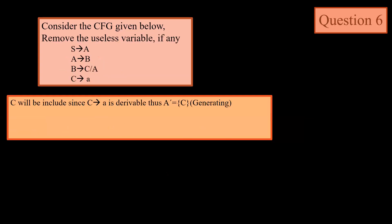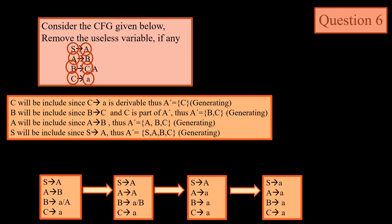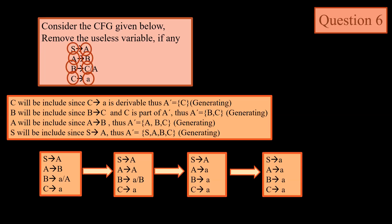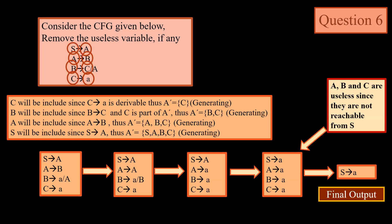Next we move to useless symbol removal from another grammar. Here C will be included since C → a is derivable. B will be included since B → C and C is part of A′. So A′ is {B, C}, which is generating. Likewise A will be included since A → B and B → A, so A is included in A′. Similarly S will be included since S → A and A is part of A′. As far as unit production removal is concerned, S → A is the only grammar generating something. So A, B, and C are all useless symbols since they are not reachable from S, and the final output will be S → A.